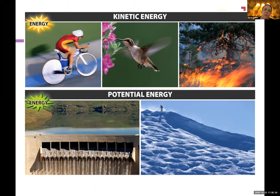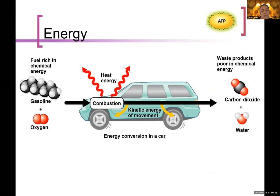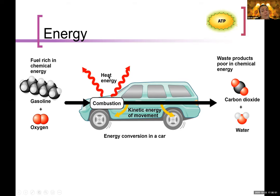Here's an example of energy transformation: chemical energy, a type of potential energy, being transformed into kinetic energy. Along the way we're losing some of that energy to an unusable form that we call heat.